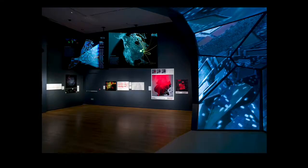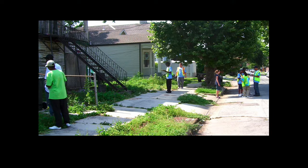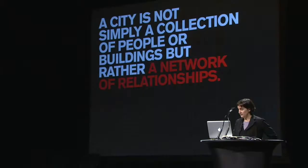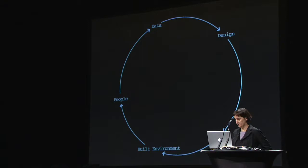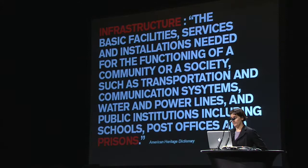I'm going to start with this project, Architecture and Justice, which was a competition we won along with collaborators at the Justice Mapping Center at the Architectural League in New York. It made it into a show called Design and Elastic Mind at MoMA. A city is not simply a collection of people and buildings, but rather a network of relationships. This is the premise of our lab: there is no neutral data. Data is design. Design affects policy. Policy affects the built environment and people, and you can enter this feedback loop at any point along the way.